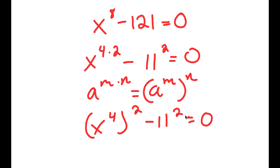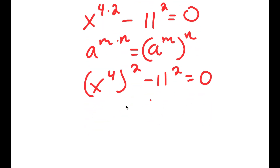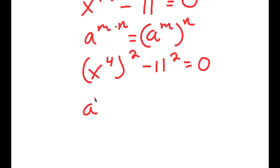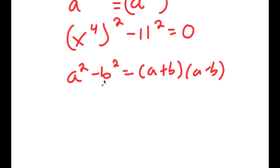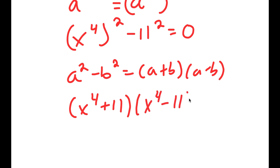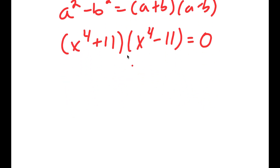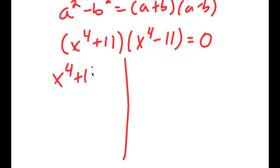Now I have x to the power of 4 squared minus 1.1 squared is equal to 0. If I have something in the form a squared minus b squared, this equals a plus b times a minus b. So this becomes x to the power of 4 plus 1.1 times x to the power of 4 minus 1.1 is equal to 0. This gives x to the power of 4 plus 1.1 equals 0, and x to the power of 4 minus 1.1 equals 0.